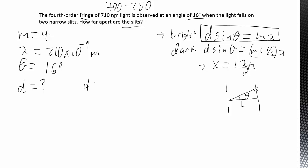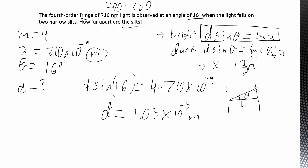And we can go ahead and plug in. D is what we're looking for. Sine of theta, we have theta, equals m, which is 4, times 710 times 10 to the negative ninth. Plug that into our calculator nice and easy, and we get 1.03 times 10 to the negative fifth, then I convert it to meters, so those are the units that I get out. Voila.